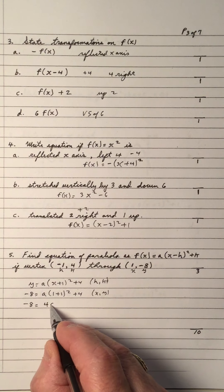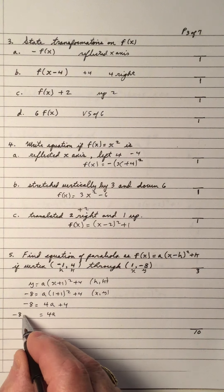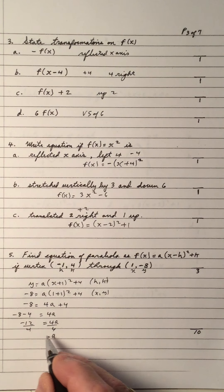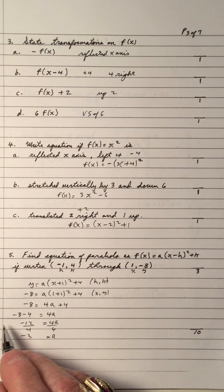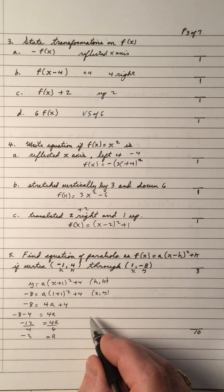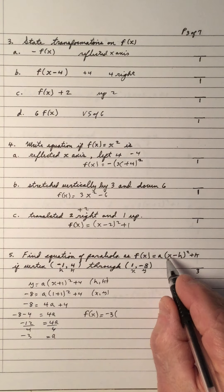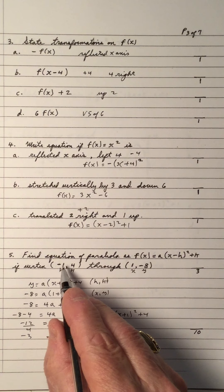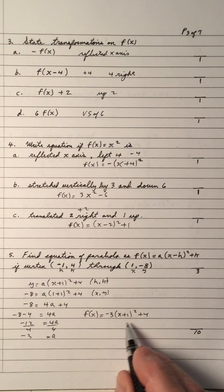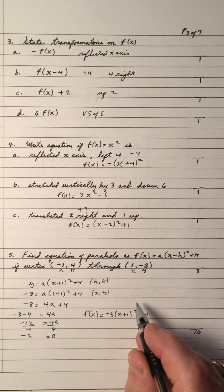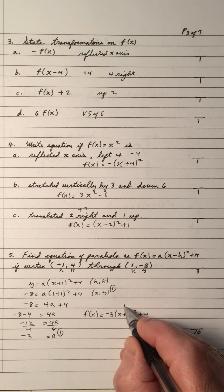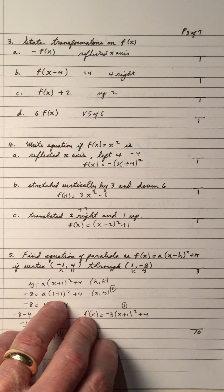2 squared is 4, so 4a plus 4. Solve for a: move the 4 across and divide. So a equals negative 3. The vertex is (-1, 4), so the equation is f(x) equals negative 3 times (x plus 1) squared plus 4. If you wrote the vertex form correctly, found a correctly, and wrote the final equation, you get 3 marks. Total up out of 10.